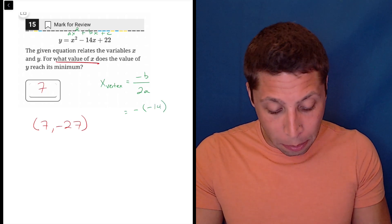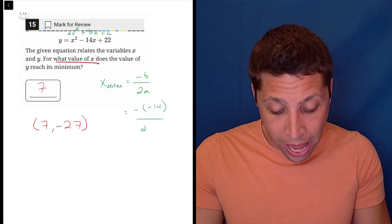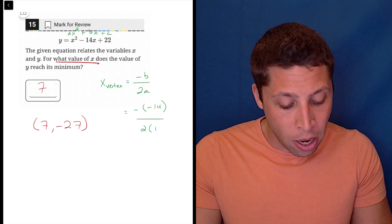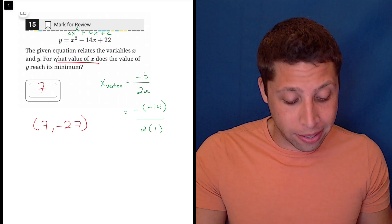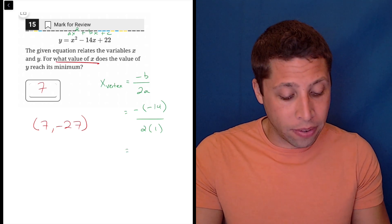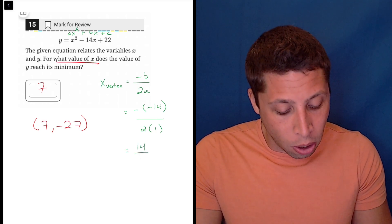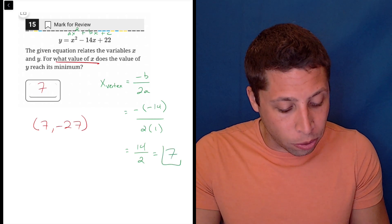So it's negative 14. So there's a double negative here. And then 2a, well, there's no number attached to the x squared, which we know means that the number is a 1. We don't write the 1, but it's there. So now that's just negative negative 14, which is 14, over 2 times 1 is 2. And so there's the 7.